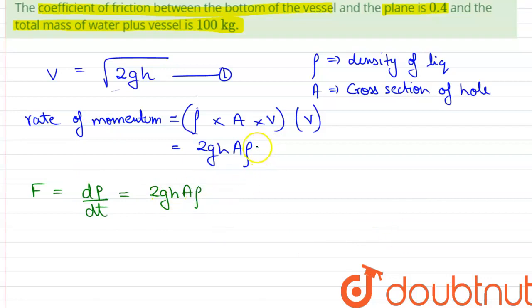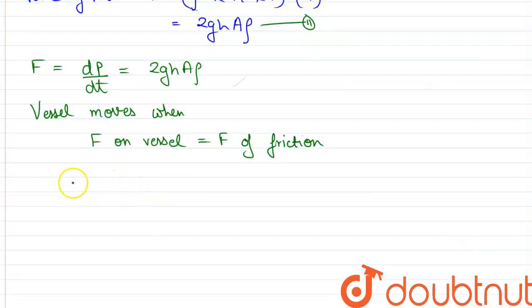Therefore, the vessel will move if the force on the vessel equals the force of friction. We can write that 2ghA rho equals mu mg. On rearranging this equation and substituting the values of g, h, rho, mu, m, and g, we can write that